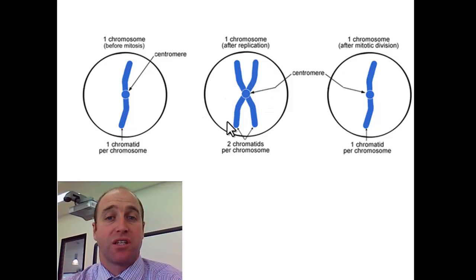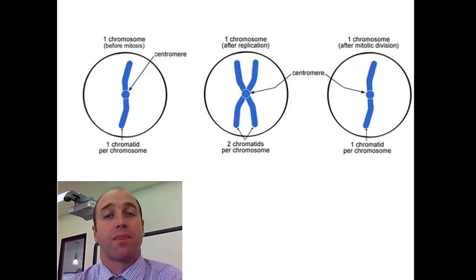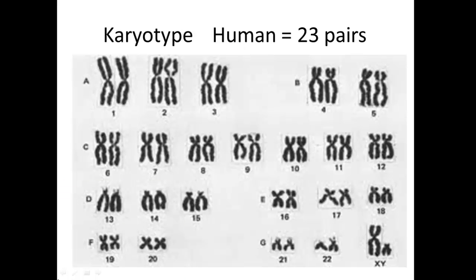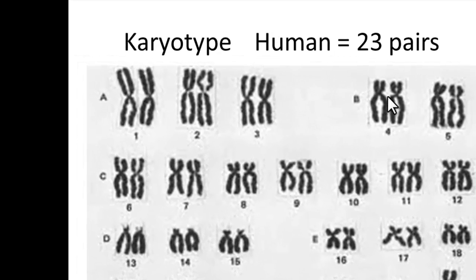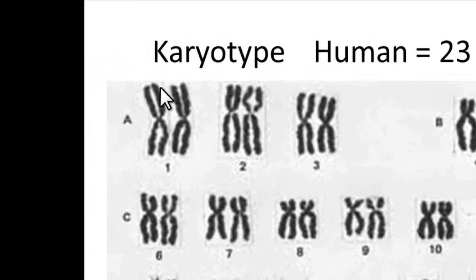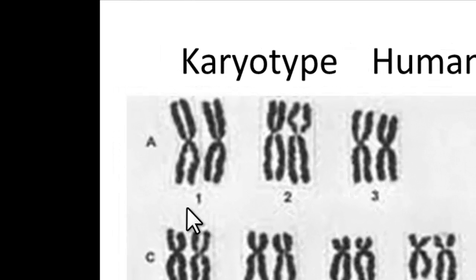When the chromosomes are in their replicated state, just before cell division, they have this classic X shape. Now it's important to remember that we, as humans, have 23 pairs of chromosomes — so we've actually got 46 chromosomes. And that process of replication is happening for each of those 46 chromosomes, so each of them is making this X shape. The result is that we end up with an exact copy of each chromosome.